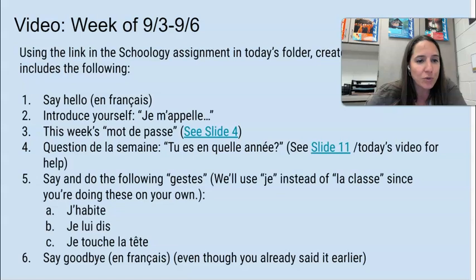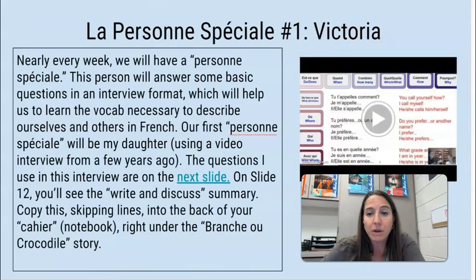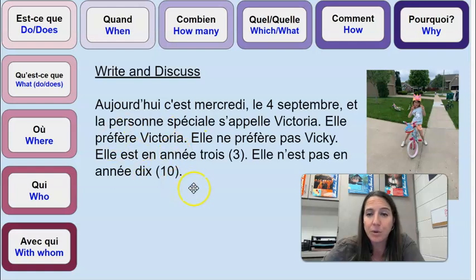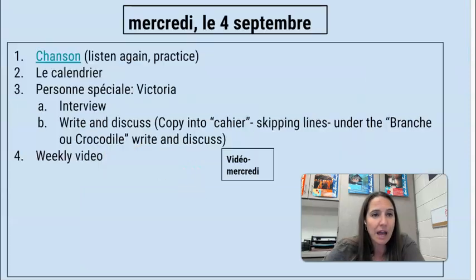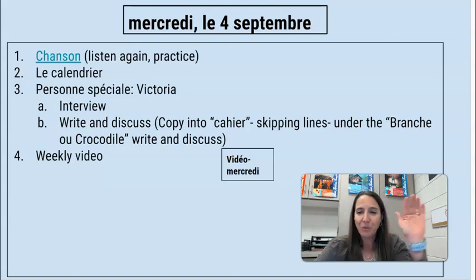C'est tout — that is it for today. You don't have anything more to do with this personne spéciale deal. Once you have written your write and discuss — or your summary — into the back of your cahier, there will be a quiz on this tomorrow, a listening quiz, but you don't have to worry about that yet. That is it for today. I will be available for office hours, Michon French Online on Google Meets, from noon until 12:30. So if you need me, I will be there. Merci. Au revoir.